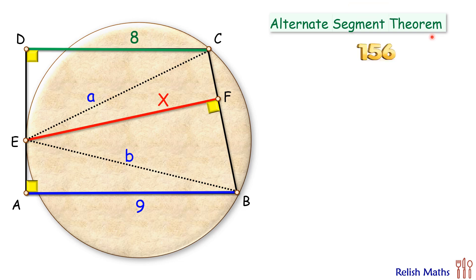It states that the angle between a tangent and a chord is equal to the angle subtended by the chord in the remaining part of the circle. That is, these two angles will be equal.